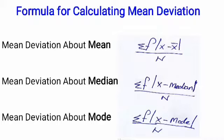The second type is mean deviation about median. Here the same formula is used, with only one difference: instead of x̄, we use the median. For mean deviation about mode, the formula becomes sigma f into |x minus mode| divided by n. Combining all three, we can see that the only difference is that x̄ is changed to median or changed to mode; all other parts of the equation are the same.